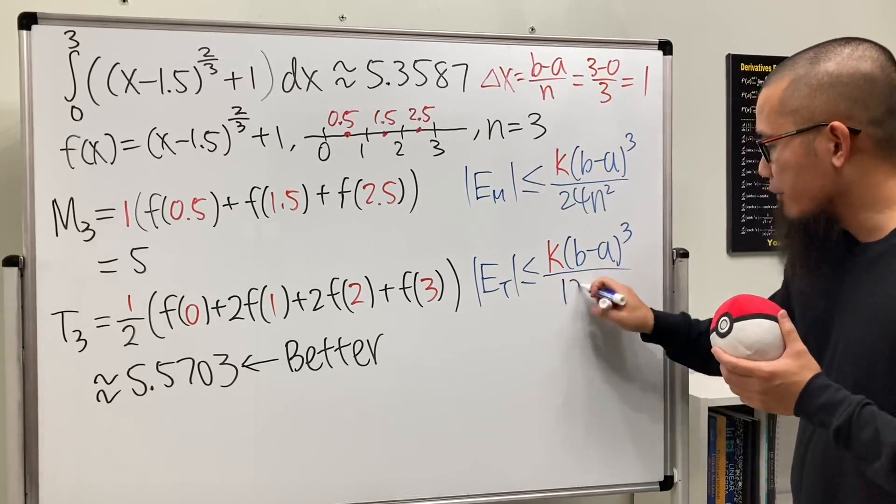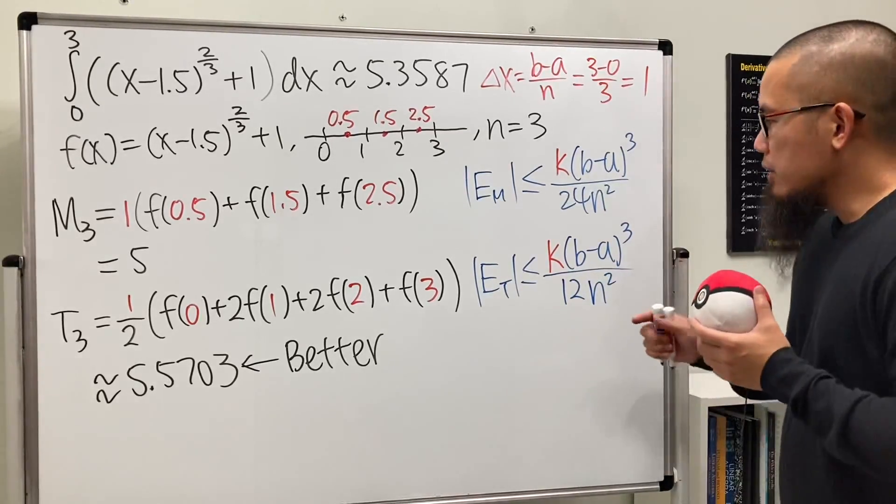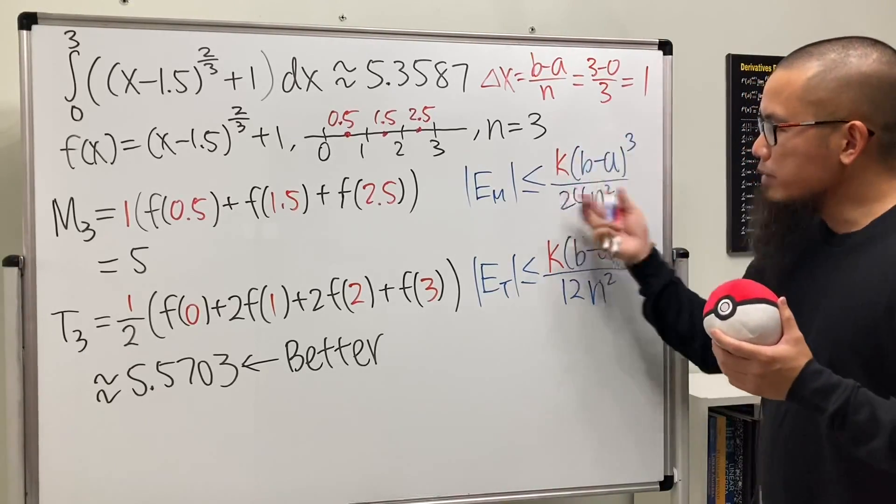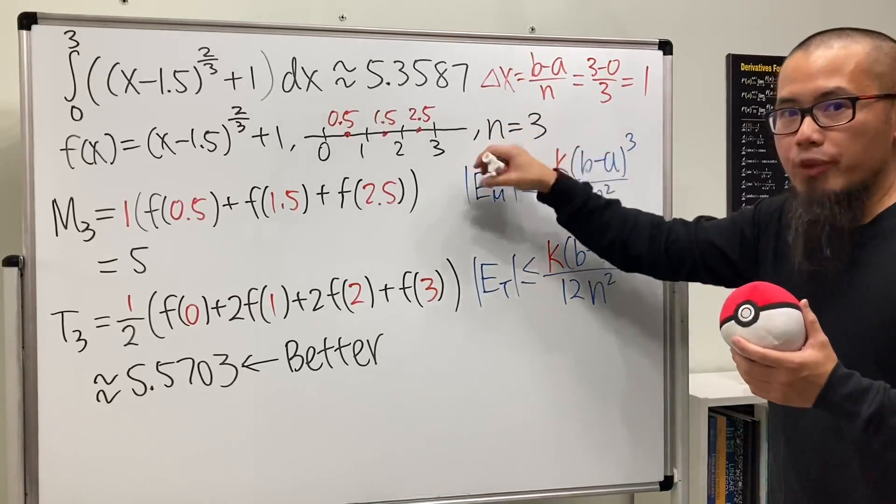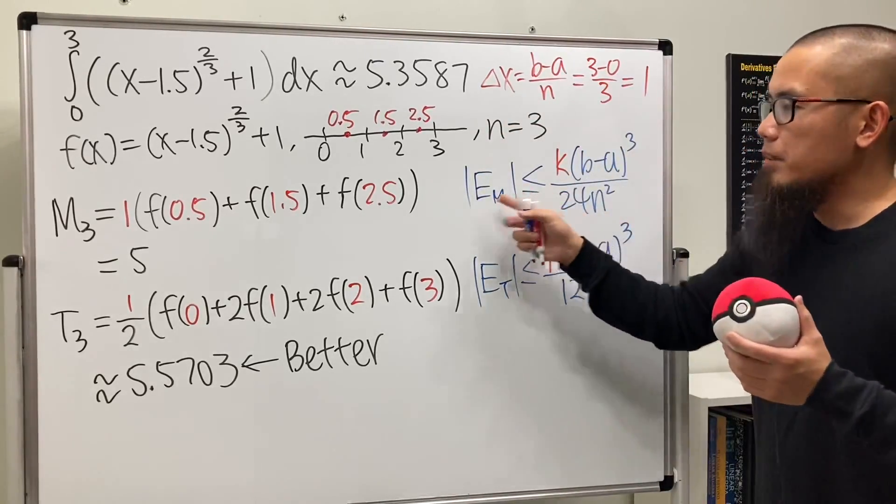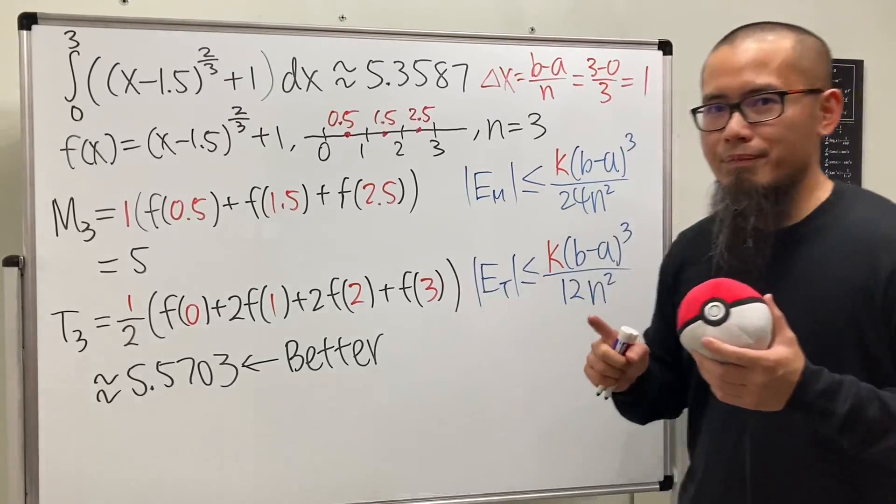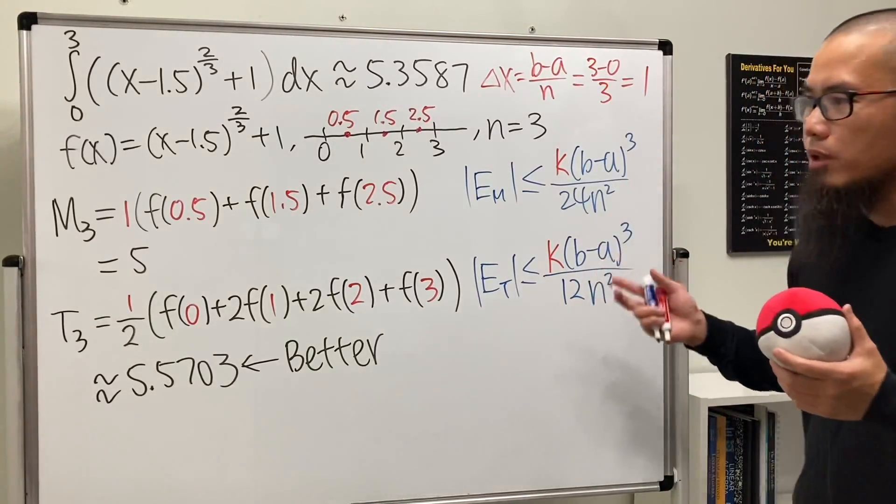As you can see, the denominator is bigger for the midpoint rule, therefore the whole thing is smaller. The idea is that we're making a smaller error, which means the midpoint rule should be better most of the time.